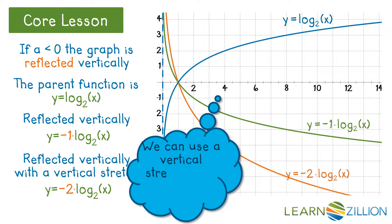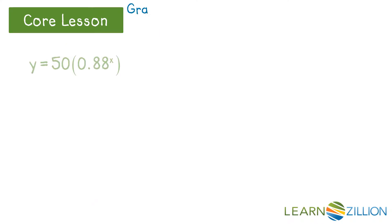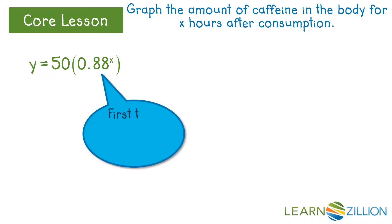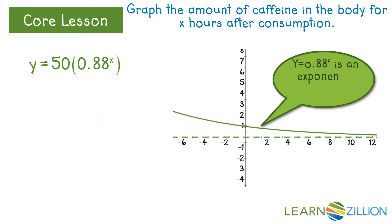Now we are ready to go back and fix our caffeine graph. Graph the amount of caffeine in the body for x hours after consumption of 1 soda. First, think about the parent function. This is exponential decay.